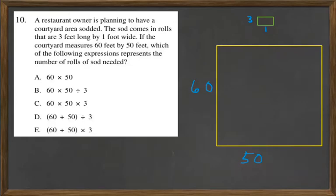A restaurant owner is planning to have a courtyard area sodded. The sod comes in rolls that are 3 foot long by 1 foot wide. If the courtyard measures 60 feet by 50 feet, which of the following expressions represents the number of rolls of sod needed?